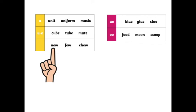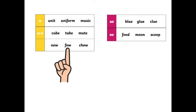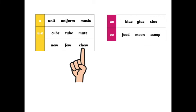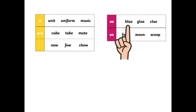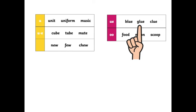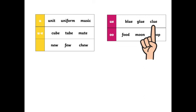N-U: New. T-U: Few. Very good. Now, what about these ones? These have a U sound in them — shall we read these as well? Bl-U: Blue. Gl-U: Glue. Cl-U: Clue.